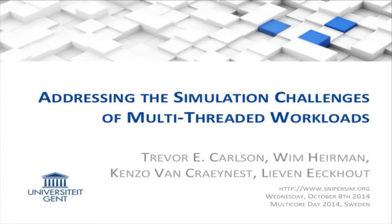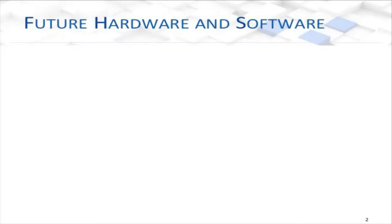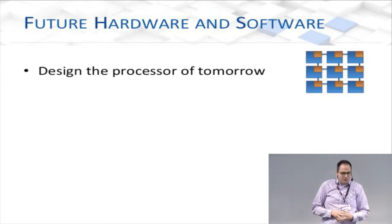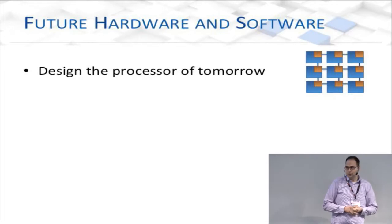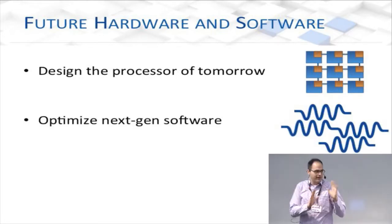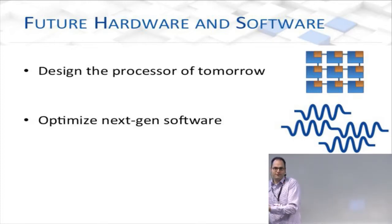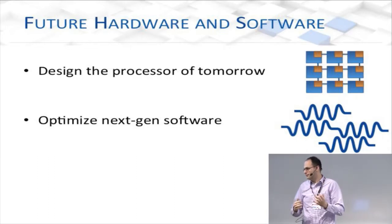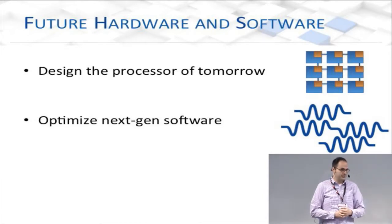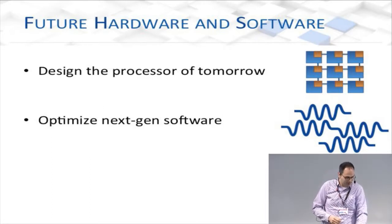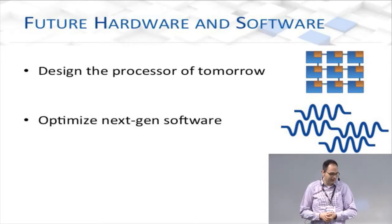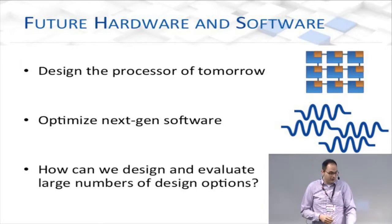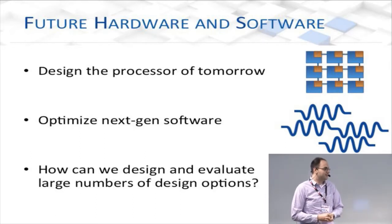Let's look at this infrastructure — future hardware and software. We want to design the processor of tomorrow, and also optimize next-generation software. We want to create new hardware platforms and new software that will run well on those platforms — for parallel, multi-threaded software running on multi-core systems. This is a very difficult problem. The design complexity and the number of design options can be very large, so how do we do this in a fast and timely manner?